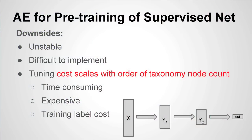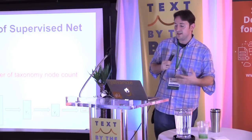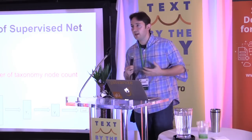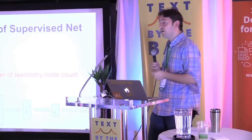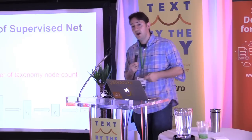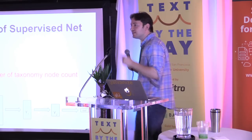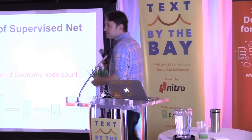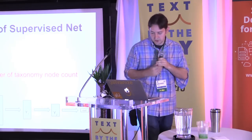You have essentially feature engineering where you've compressed high dimensions down to low dimensions that your classifier can find the grooves in. You could fine-tune with backprop. But what are the downsides? Number one, it can be very unstable. Number two, it can be difficult to implement. Number three, the cost scales with the order of the taxonomy node count — it's going to be very costly if you have hundreds or thousands of different taxonomies, because you've got to repeat this entire process without any savings every single time.